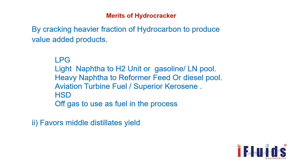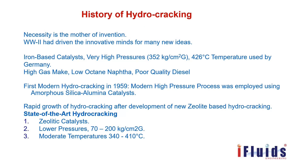By cracking heavier fractions of hydrocarbon, value-added products are produced. These products are LPG, light naphtha, heavy naphtha, aviation turbine fuel or superior kerosene, and HSD. The off-gas produced in the process is used as fuel within the refinery itself. Hydrocracker units favor middle distillate yield.